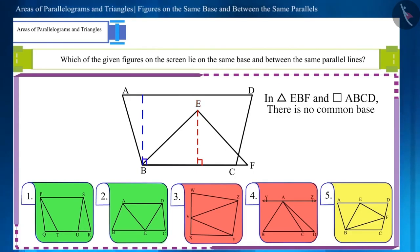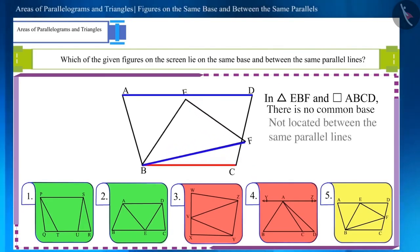The vertex of the triangle E is below the side AD. We can also see that these figures are neither on the same base nor are they located between the same parallel lines.